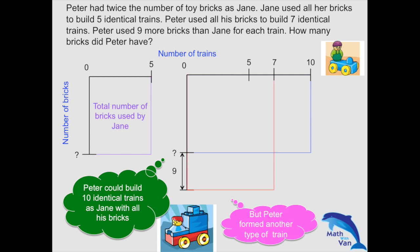So again, this area represented by the black and the red lines actually represent the number of bricks that Peter had. And both are the same.